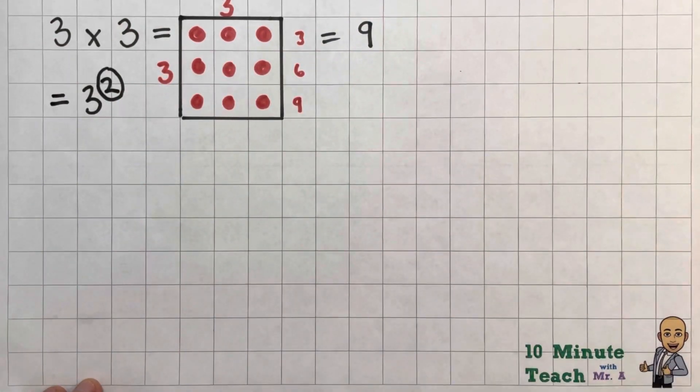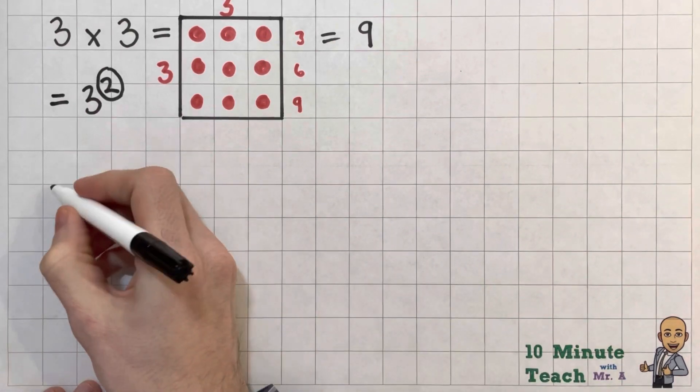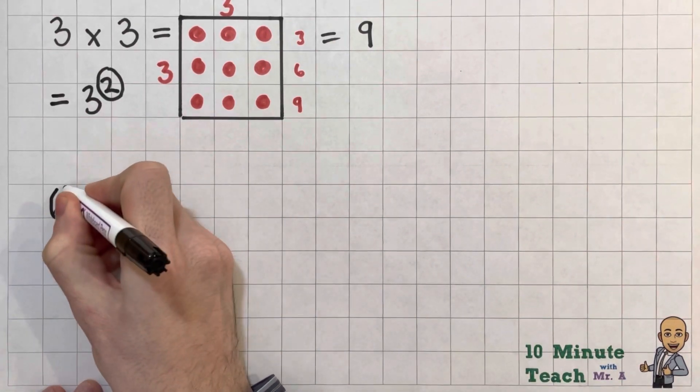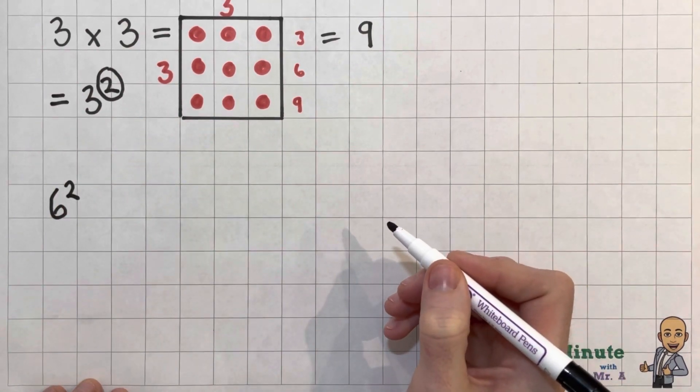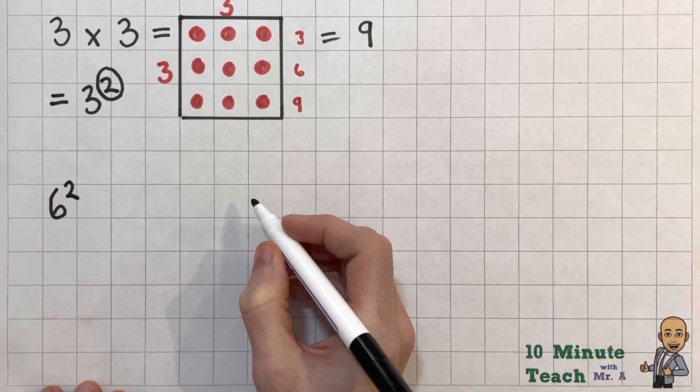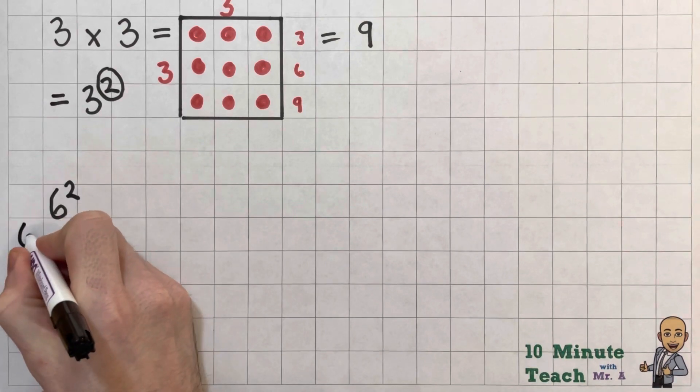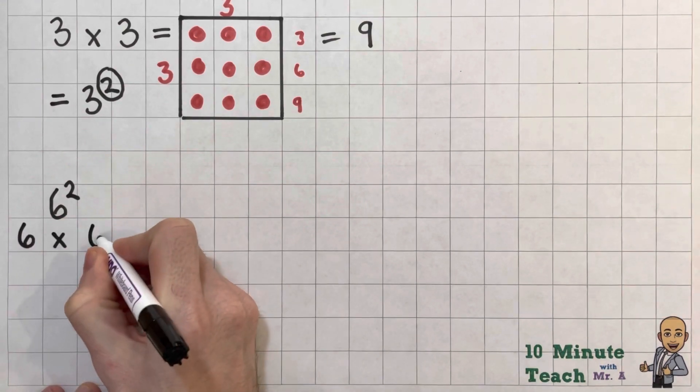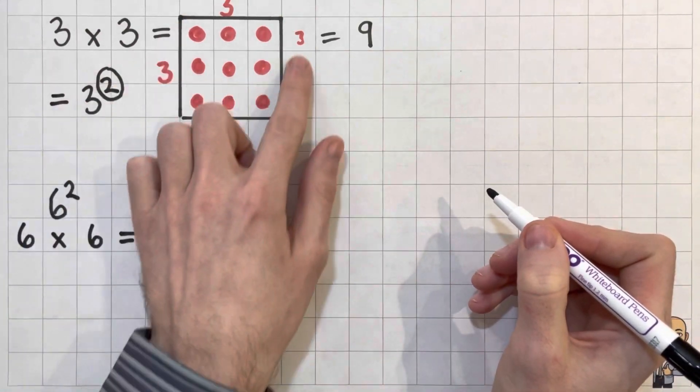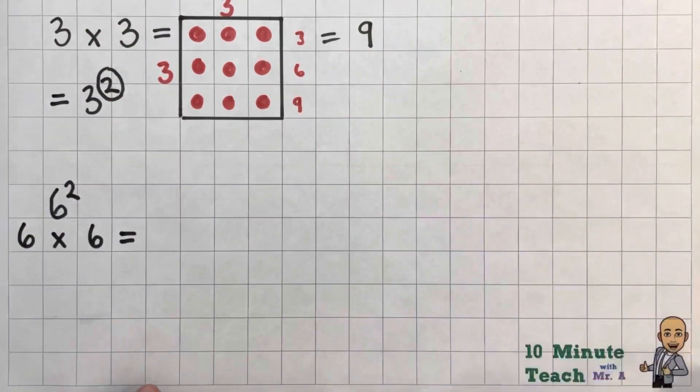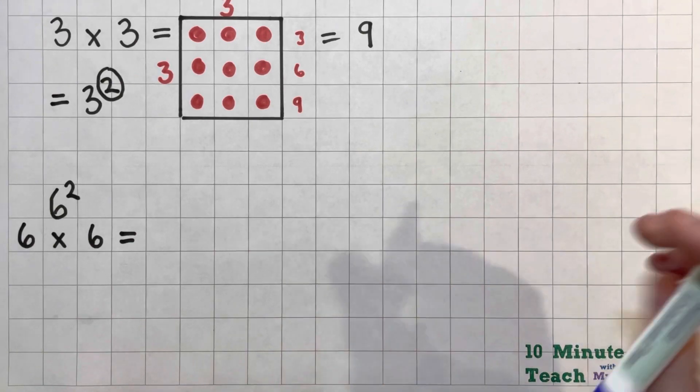So let's have another go at another example. I'm going to choose 6 squared. So let's make that easy for ourselves and write it out as a calculation as well. So we can say it is 6 times 6. And let's see what that equals. Well, I'm going to use my little diagram that we used earlier to help.